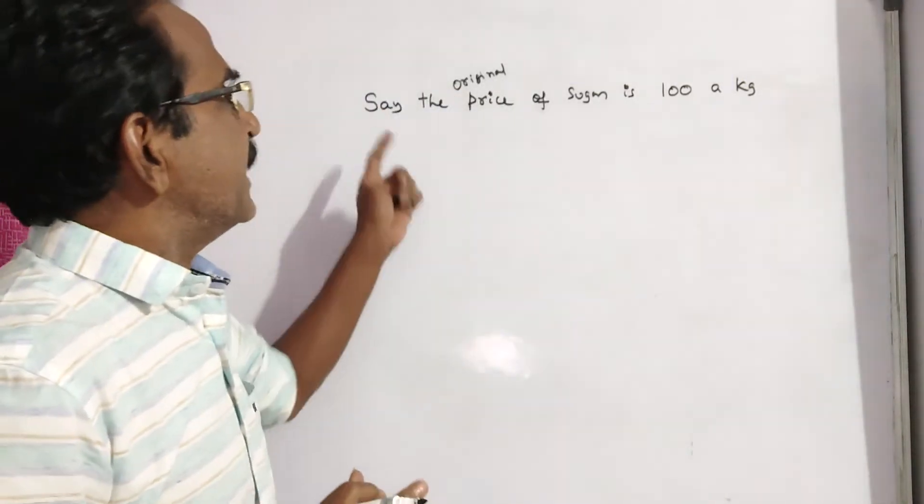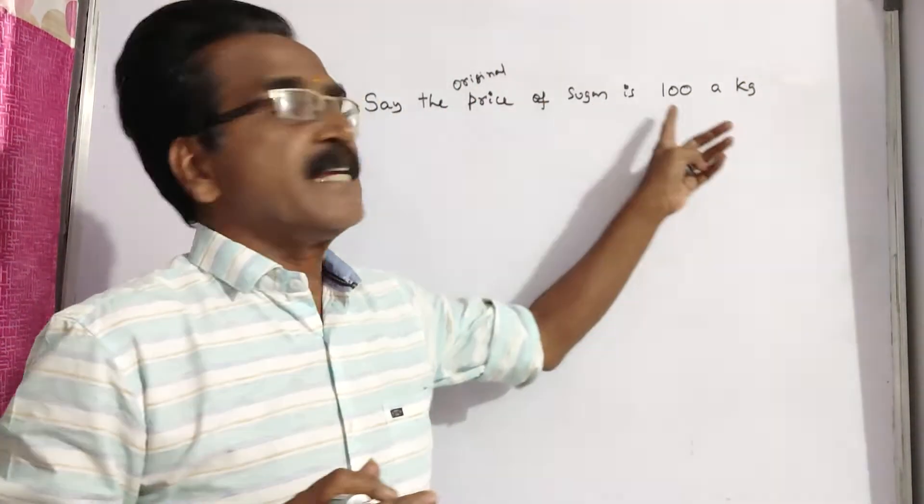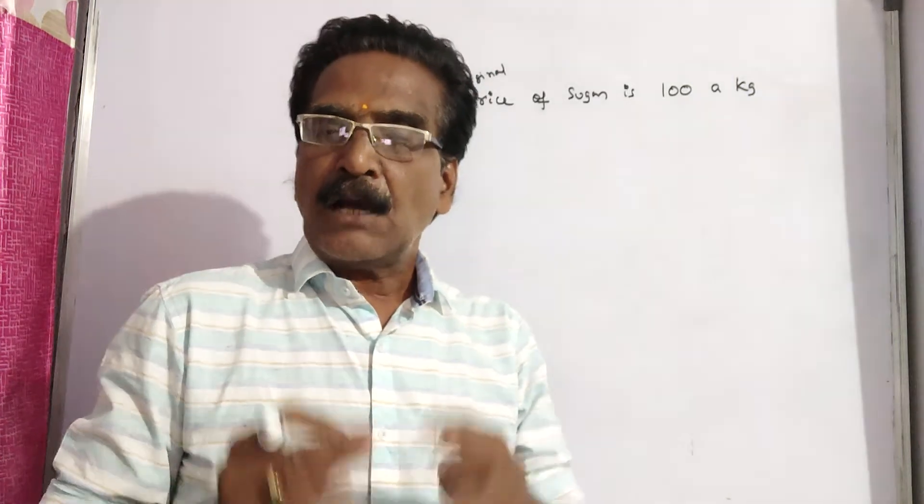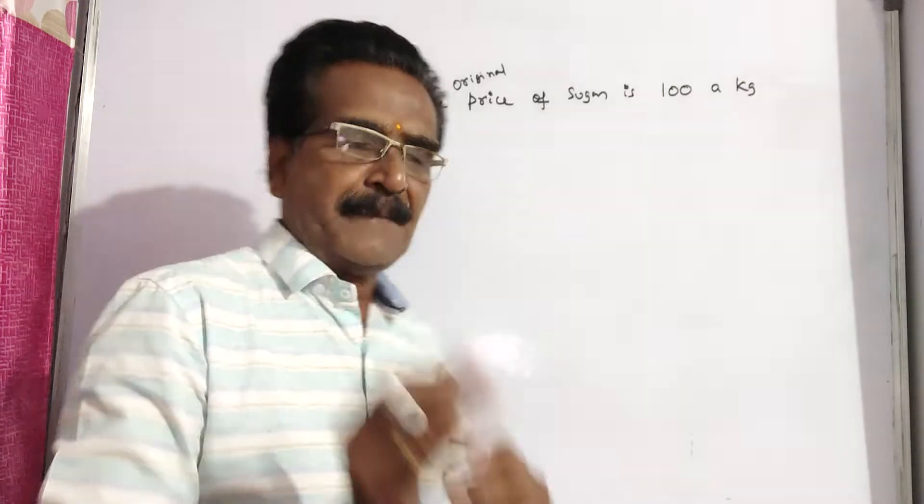Let us say the original price of sugar is 100 rupees a kg. Now the price is decreased by 30 percent.